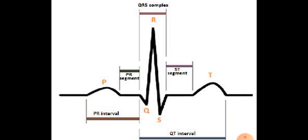During atrial systole, the atria contract and blood moves into the ventricles — both the left and right ventricles. So we call this depolarization of the atria, which leads to the contraction of both the atria.